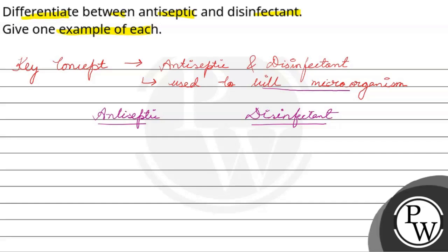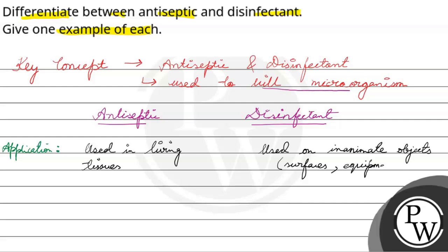Let's look at the first one. The first is the application. Antiseptic is used in living tissues. Disinfectant is used on inanimate objects, which means on surfaces. It means living tissues are not used on surfaces or equipment either.